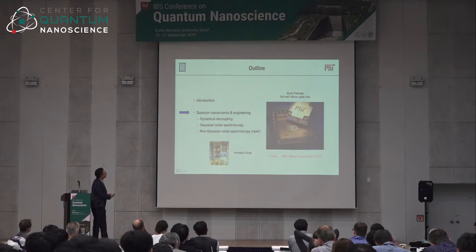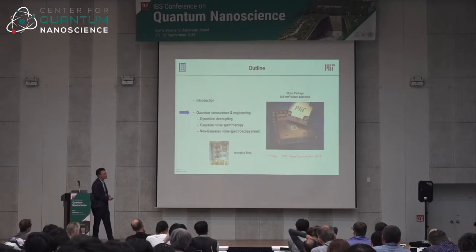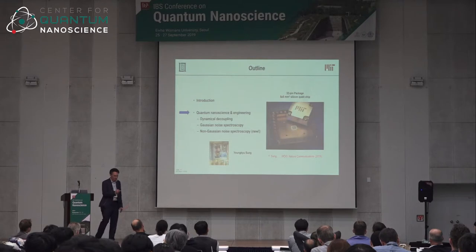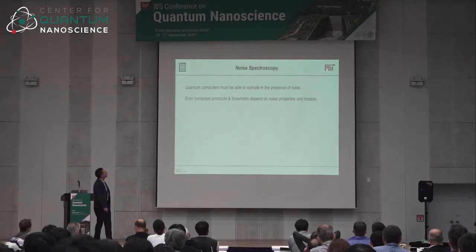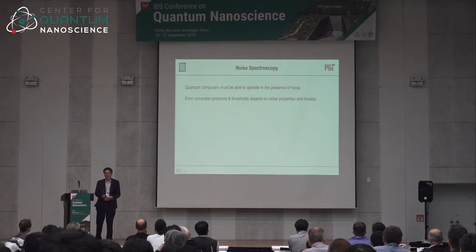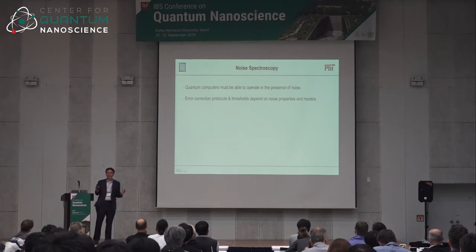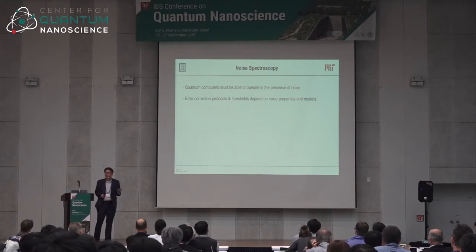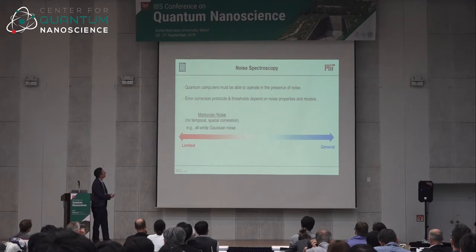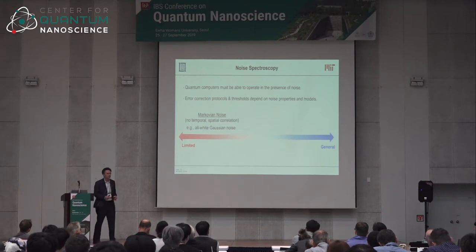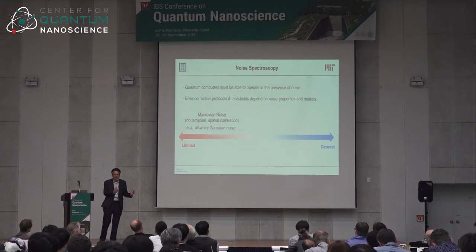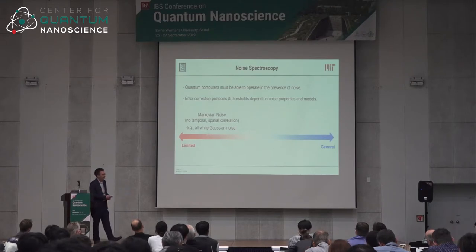This non-Gaussian noise work was led by graduate student Young Kyu Sung from Seoul National University. Why do we need noise spectroscopy? Quantum computers must operate in the presence of noise, and we want to use error-correcting protocols whose thresholds depend on noise properties. Today we typically assume Gaussian or Markovian noise — which is easy to analyze — but whether it represents reality is not clear, and in general it doesn't have to be.